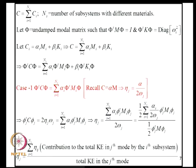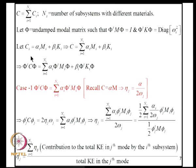Let C be made up of the CI's, and let phi be the undamped modal matrix so that phi^T M phi is identity and phi^T K phi is the diagonal matrix of eigenvalues. We assume each subsystem has Rayleigh proportional damping: CI = alpha_I * M_I + beta_I * K_I, so C can be written in that composite form.